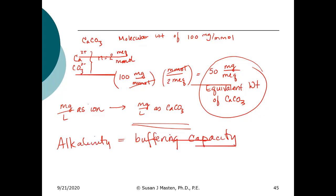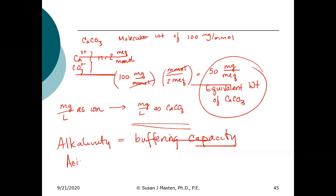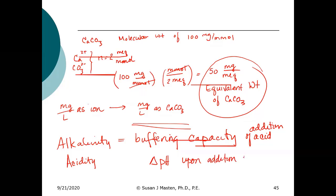Alkalinity is the buffering capacity of a water — specifically, the ability of a water to resist a change in pH upon the addition of an acid. Acidity is the ability of a water to resist a change in pH upon the addition of a base. That's the difference between alkalinity and acidity.